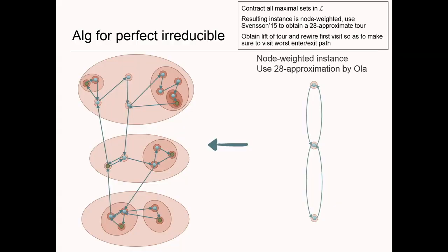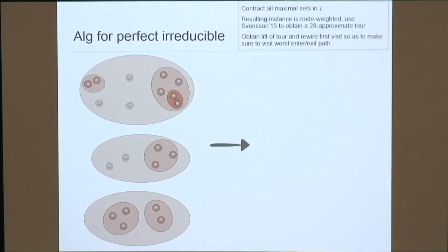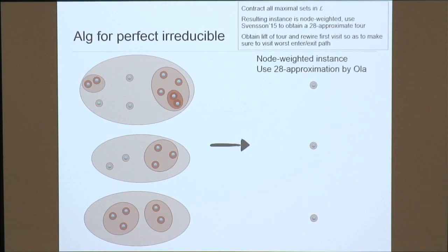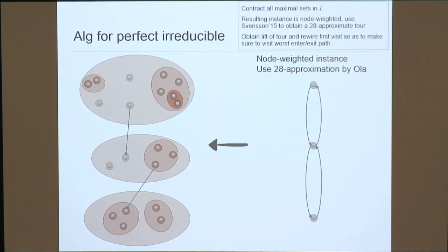Here's the algorithm for this perfectly irreducible case. We have all singletons; we contract them. The resulting instance is node-weighted — meaning the weight of any edge is just the sum of the node-weights of its endpoints. Node-weighted ATSP is solvable by Svensson's results with a 28-approximation. We find this brilliant tour of the contracted instance.